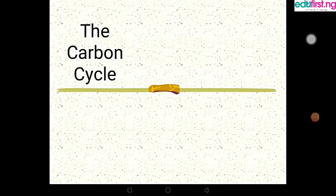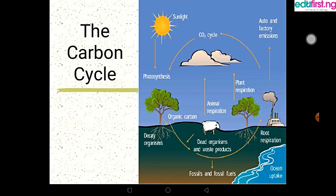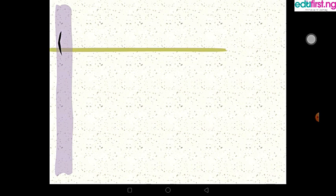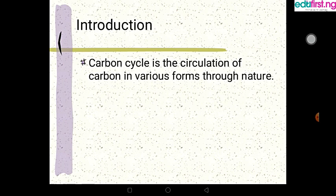Good day everyone. Today we are having our chemistry class on the topic the carbon cycle by Ibrahim Abouki. To start with, what is the carbon cycle? The carbon cycle is the circulation of carbon in various forms through nature.